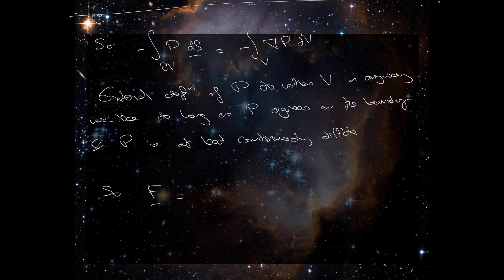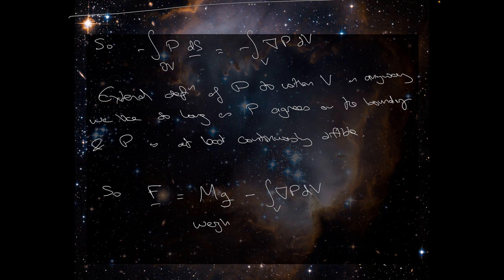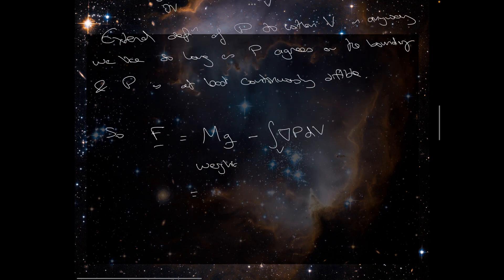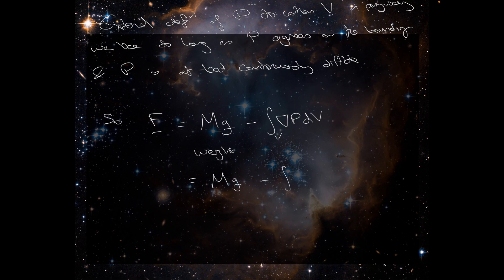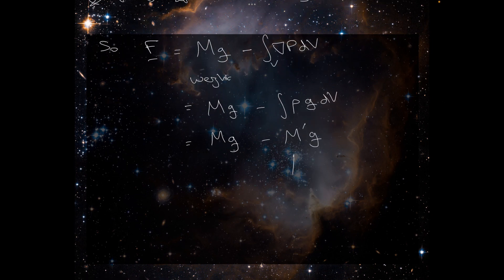So the total force acting on the body is mg, the weight. And then we have minus the gradient of P integral over the volume. So we know that that's equal to the integral rho times vector G dV. So that's the mass of the body times gravity. Or G can come out, and that just leaves me with M prime times G. Well that's the mass of the displaced fluid.